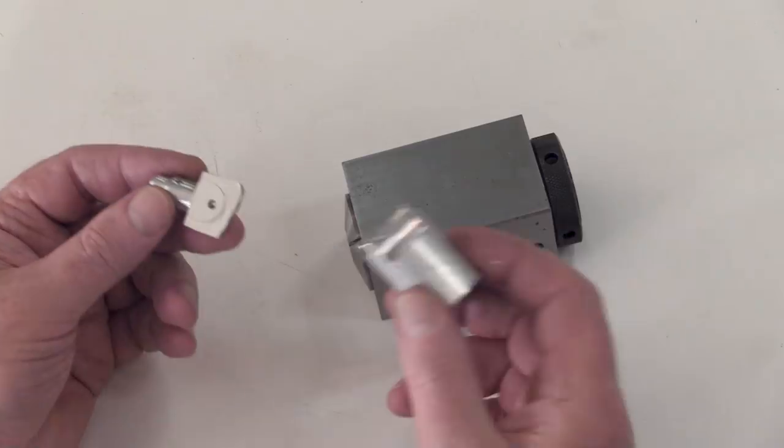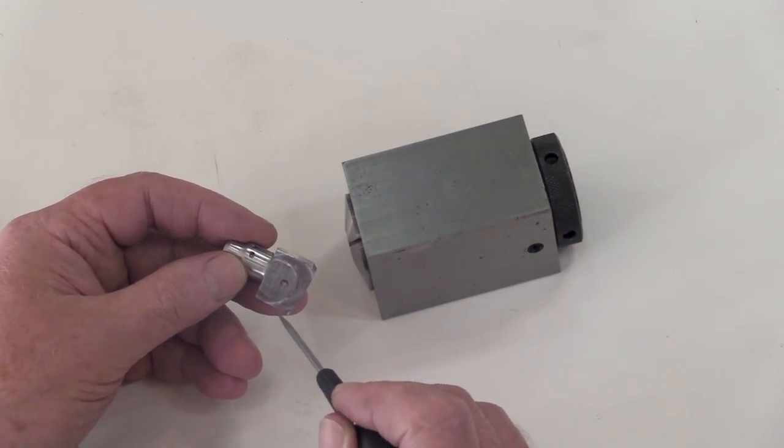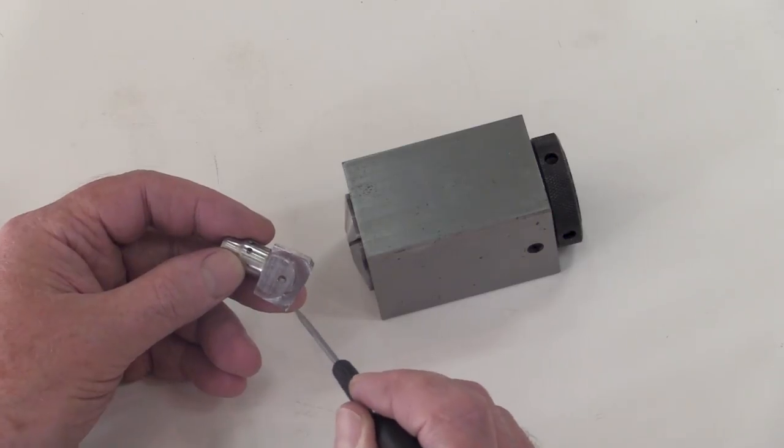And the last step is to cut out that slot where the cable passes through. Once that's done, I remove the waste stock from the part because the next operation is to cut that rounded profile at the end of the part.